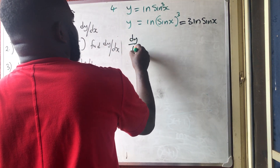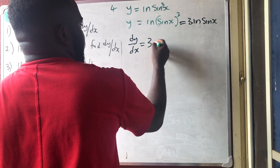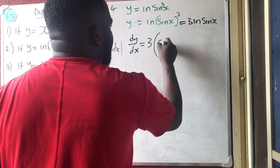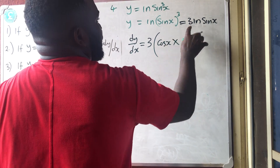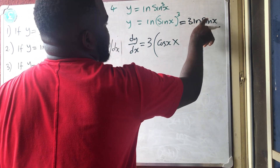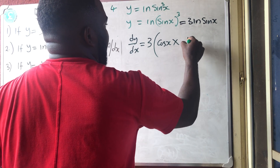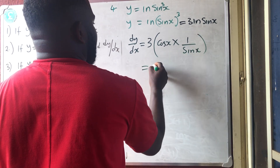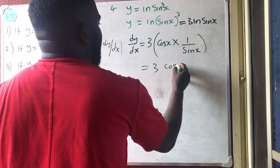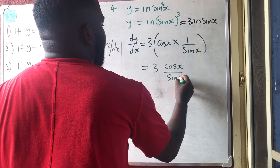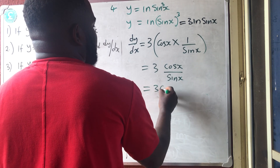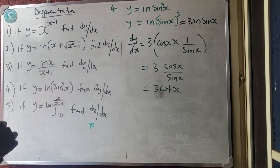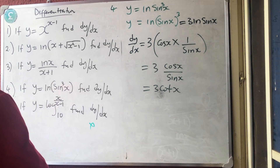Differentiating dy/dx: leave the constant 3, then differentiate the bracket sin x to get cos x, times differentiate ln of something to get 1 over that something. So dy/dx equals 3·cos x over sin x. Since cos x over sin x equals cot x, the answer is 3·cot x.